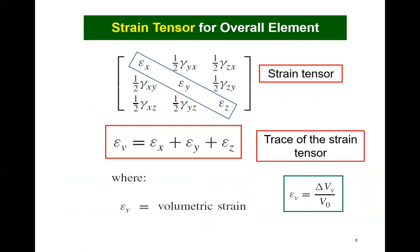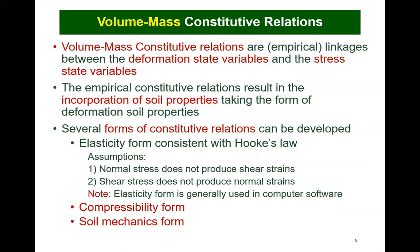A strain tensor can be written for the overall REV element. The strain tensor is comprised of three longitudinal strain components and six shear strain components. Only the soil solids can sustain the shear component of deformation. The trace of the strain tensor, that is the sum of the three longitudinal strain components, yields the overall volumetric strain of the REV. The assumption is made that only longitudinal strains result in the change in volume of the REV. Volume mass constitutive relations are empirical mathematical linkages between the deformation state variables and the stress state variables. The constitutive relations always result in the incorporation of material properties — that is, they are deformation soil properties.